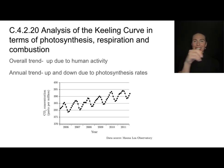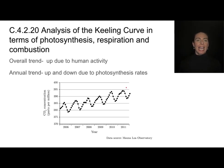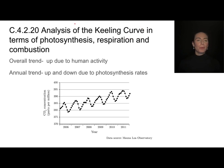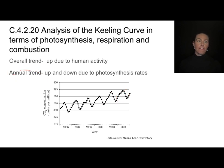We're going to notice some trends in carbon fluxes, both within a year and throughout multiple years. This is a diagram called the Keeling Curve — it's something you'll be expected to find familiar. We're going to notice two trends: an overall trend, and an annual trend of up and down throughout the year. Let's talk about this annual trend first — every year we're seeing a dip where carbon dioxide levels are going down.